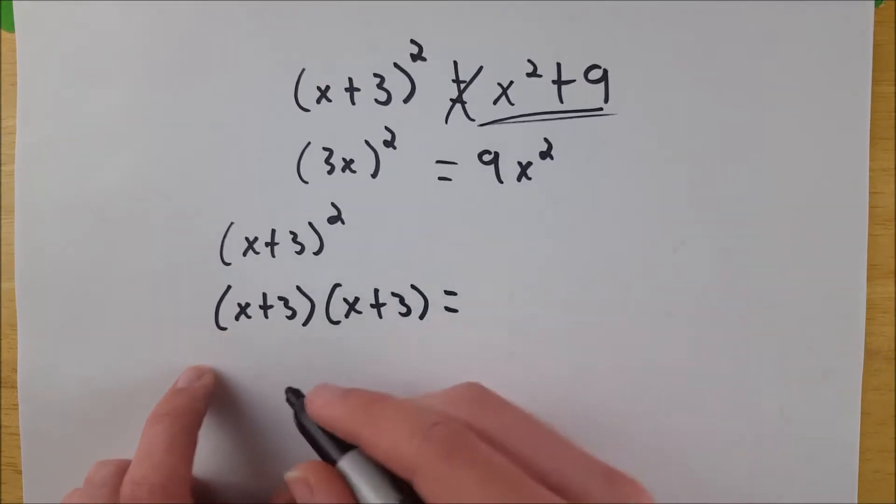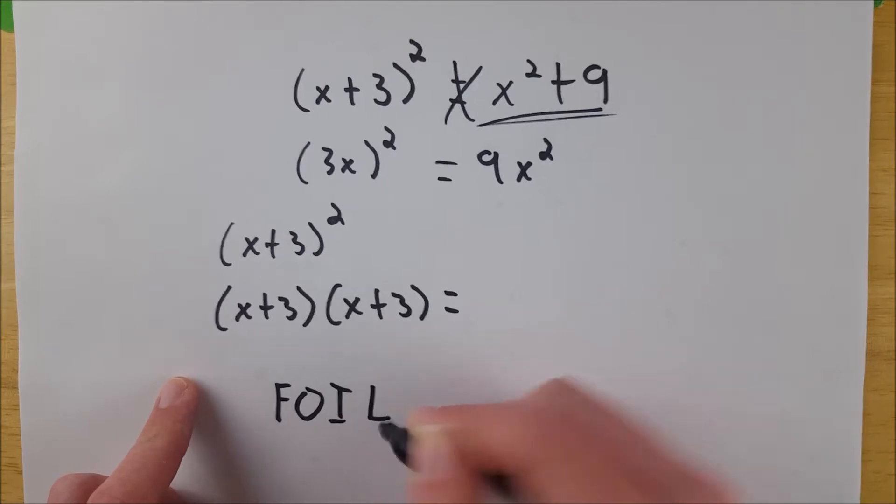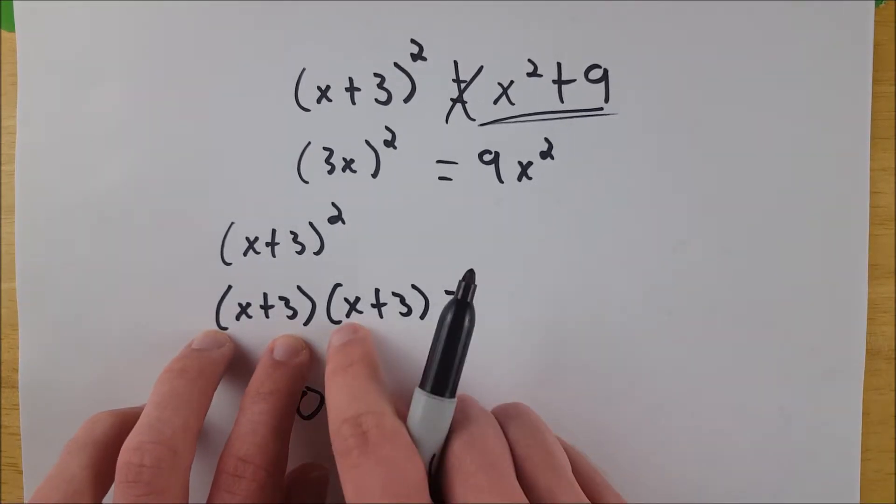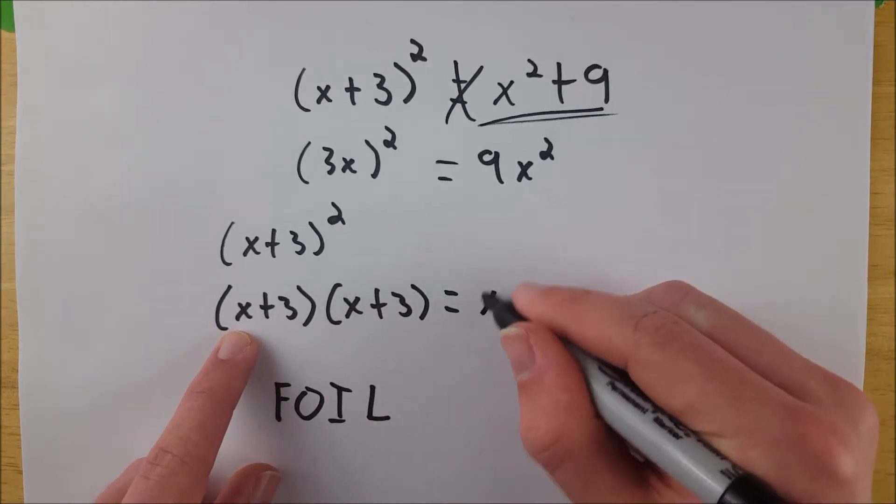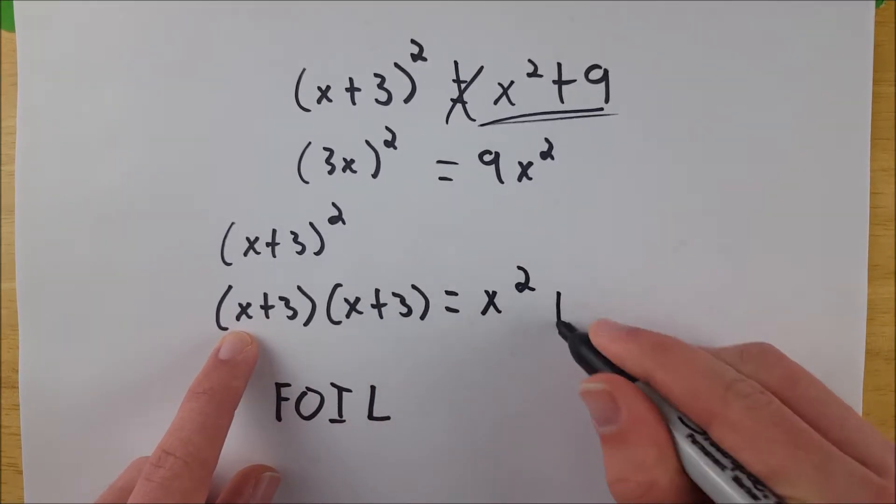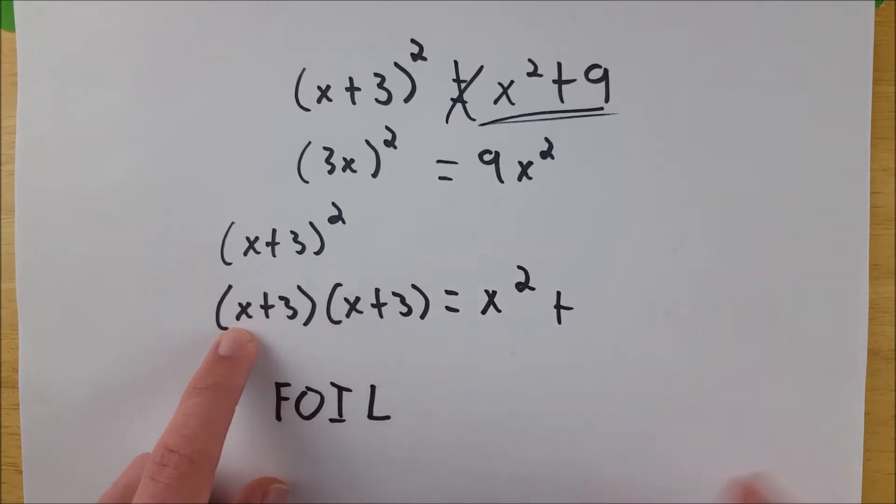So you've got to multiply. Well, I'll write out the FOIL and spell it out that way. So FOIL tells us that when we've got something like this, we've got to multiply our first terms. That's x times x. Then multiply our outside terms. That's x and 3, so x times 3. That's plus 3x.